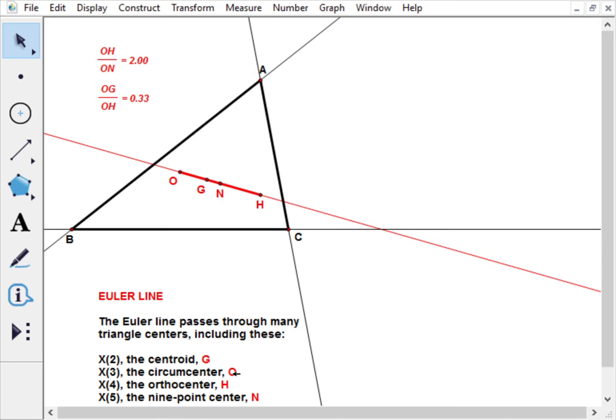and the orthocenter is H (although sometimes referred to as O, which can be confusing). So here is the orthocenter in this situation, here is the centroid, and here is the circumcenter of the triangle. These three points lie on the Euler line.